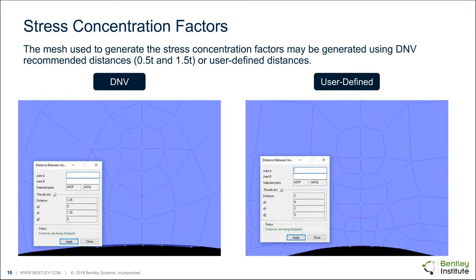For the stress concentration factor option, you have the choice of generating the mesh using the DNV recommended distances or your own user-defined distances. There are a few different extrapolation options. As we saw, the extrapolation picks out two points and extrapolates along that line to the weld toe. If you pick different points, you can get slightly different hotspot stresses for the connection. If you're using a different approach, you'll want to use your own user-defined distances.